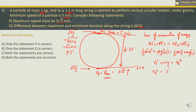Vb squared equals Vt squared plus 4Rg, which is 5 squared plus 4 into 1.2 into 10, giving us 25 plus 48 which is 73. So velocity at the bottom is root of 73, which is definitely not equal to 5 root 5 meter per second. Therefore, statement P is incorrect.